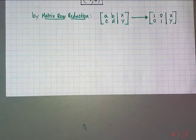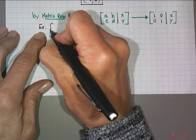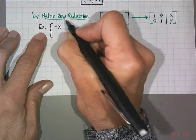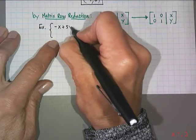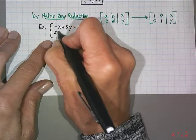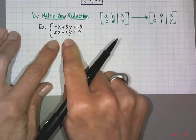I'm going to start with this example right here. If I have the system negative x plus 5y equals 15 and 2x plus 3y equals 9, and I intend to solve by matrix row reduction.